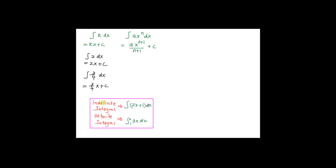So what is an indefinite integral compared with a definite integral? For an indefinite integral, you have something like the integration of (2x + 1) dx. For a definite integral, the only difference is that you have limits — for example, the integration from 1 to 2 of 3x dx. Remember, for an indefinite integral where there are no limits, you must put plus c as a constant.